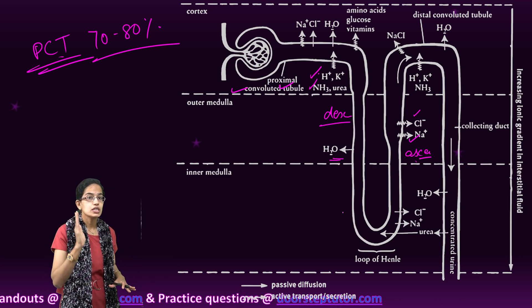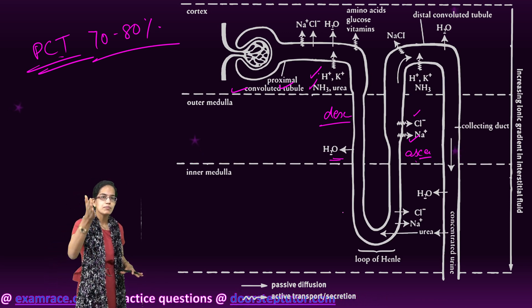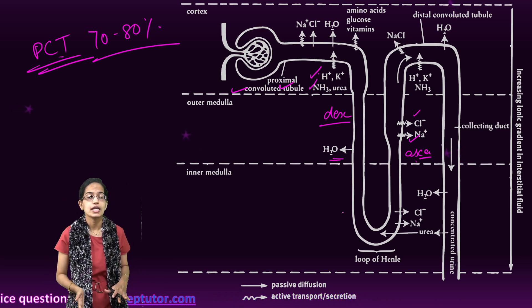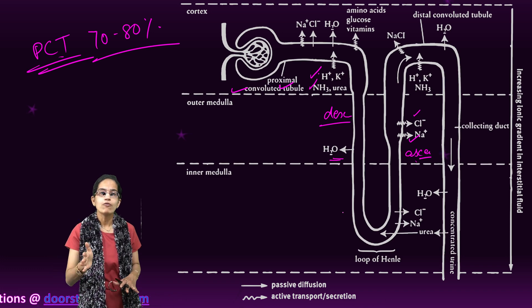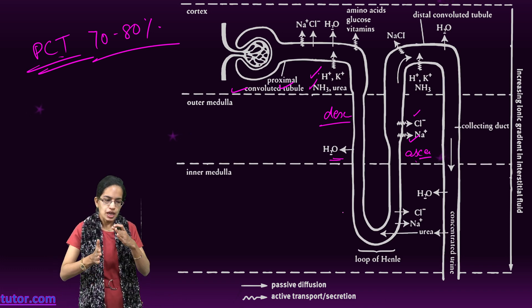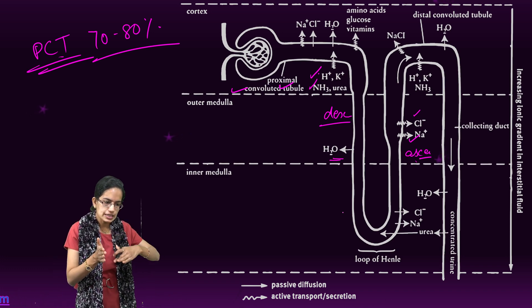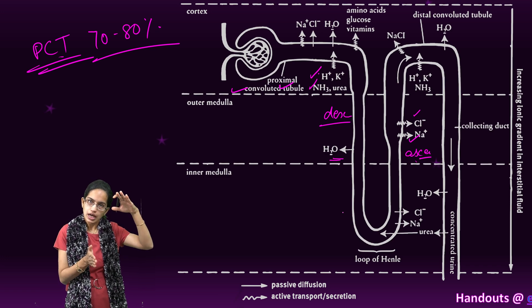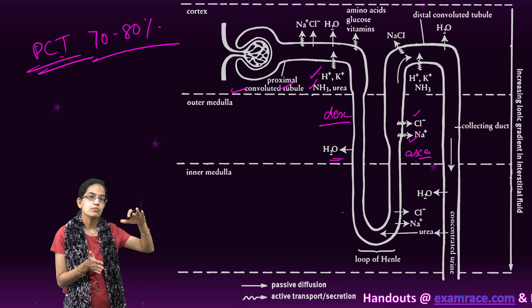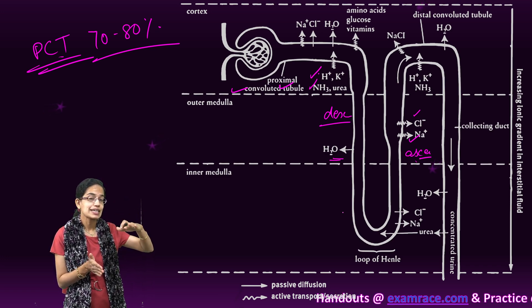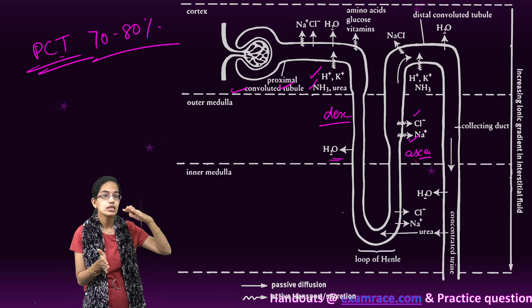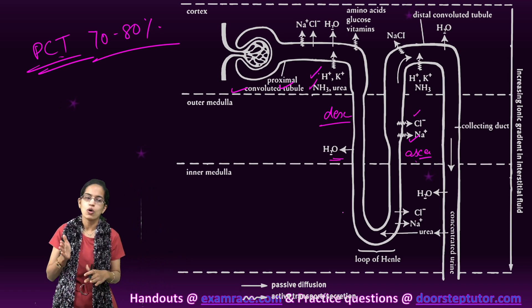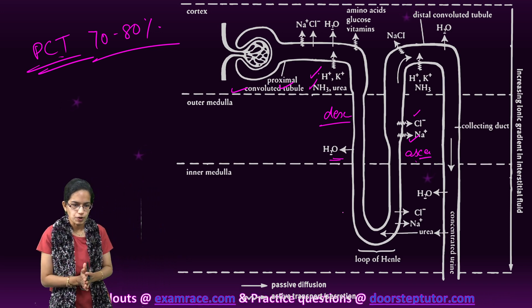Reabsorption is minimum in the descending limb because of the high osmolarity of the interstitial tissues. However, it increases as you move towards the ascending limb, so reabsorption is technically more in the ascending limb compared to the descending limb of the loop of Henle.